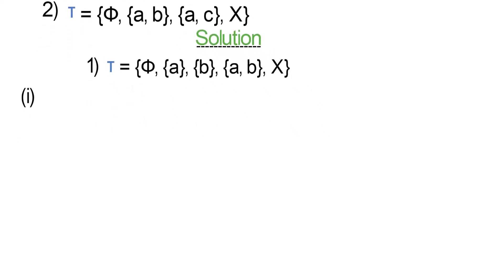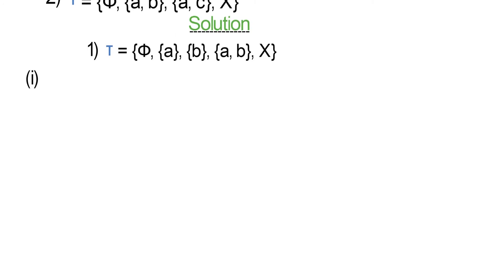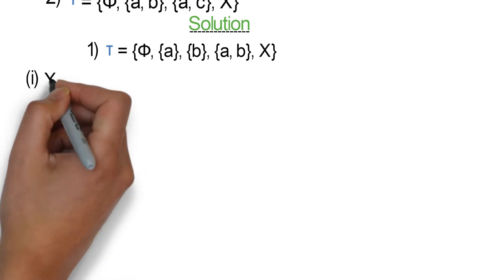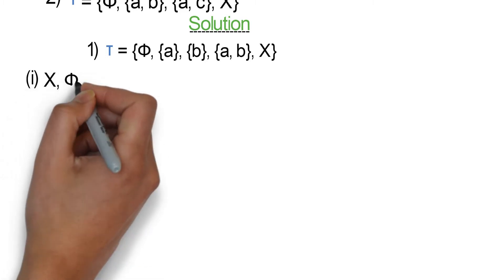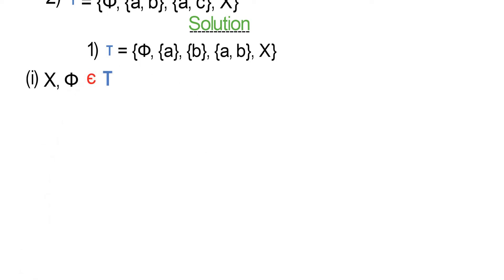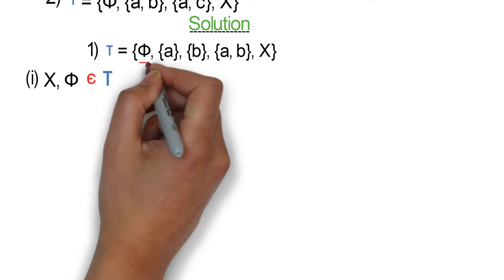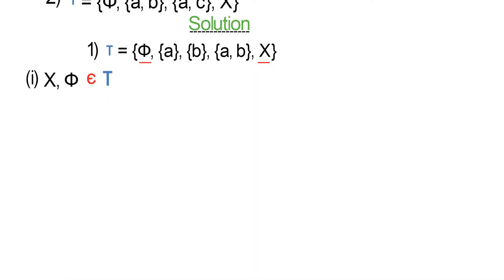We have to show that tau satisfies the three conditions of a topology, as learned from our last class. Condition 1 states that the entire set X and the empty set are elements of tau. We can see that this is true from the given elements of tau in the question. So condition 1 holds.